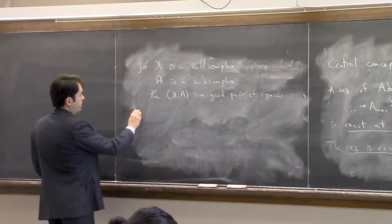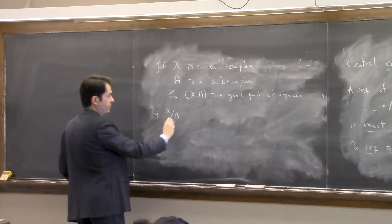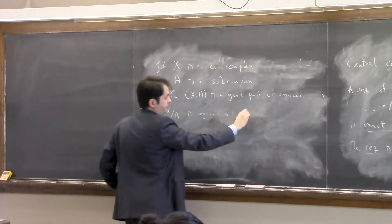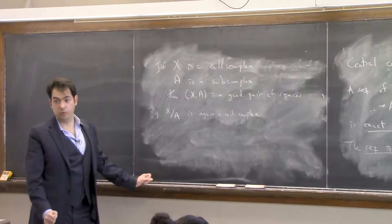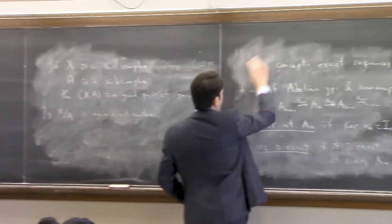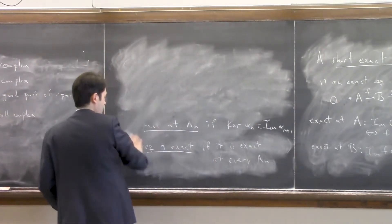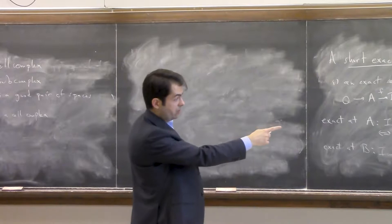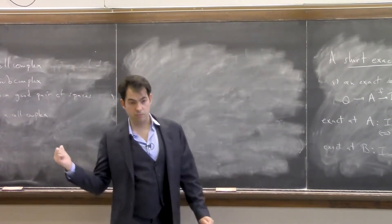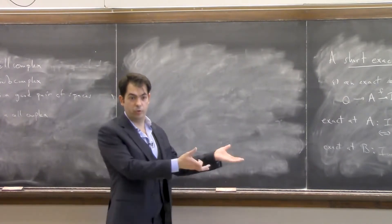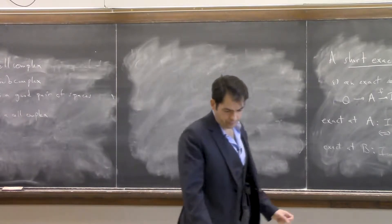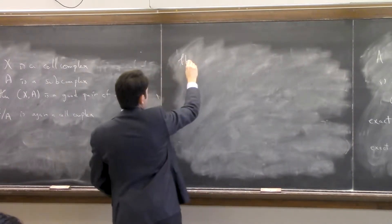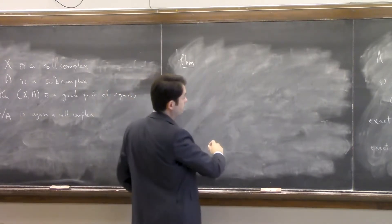One nice property of good pairs: if you take X and collapse everyone in A to a point, this is still a cell complex. The theorem we will prove in several classes: if (X, A) is a good pair, there is a long exact sequence.